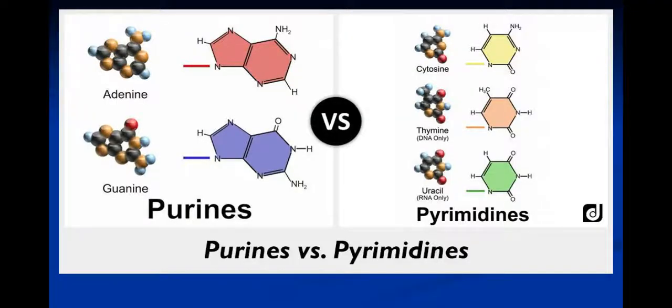Next up, we have another set of classifications within each of these nitrogenous bases. So we have purines and we also have what are called pyrimidines. So notice if you were to observe very quickly that the purines are going to have two of these ring-like structures versus these pyrimidines are going to have a single ring-like structure.